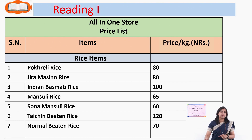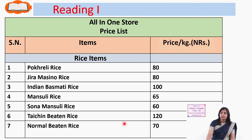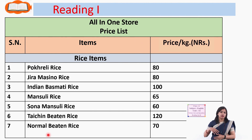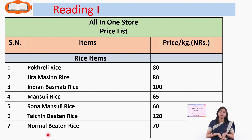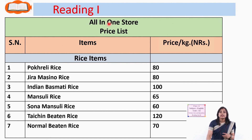There is a chart and the name of the shop is 'All in One Store.' Just like shops in your locality, this shop has a price list with different items listed along with their prices.